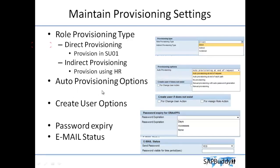The second one is provisioning options — auto provisioning options. The first option is auto provisioning at the end of request: once all approval steps are done the provisioning will be done. For example, if a request has four roles with four different role owners, all roles must be approved by role owners and other configured approvers, then the entire user is provisioned at once at the end of the request.